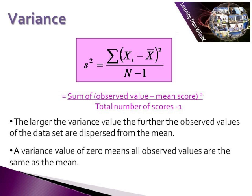The variance equation — S squared — is the sum of each observed value minus the mean, squared, divided by the total number of scores minus 1. The larger the variance value, the further the observed values are dispersed from the mean. A variance value of zero means all observed values are the same as the mean. The closer S squared is to zero, the more closely aligned the values are to the mean; the bigger the value, the more dispersed the values are from the mean.